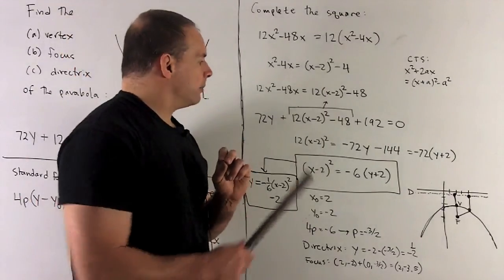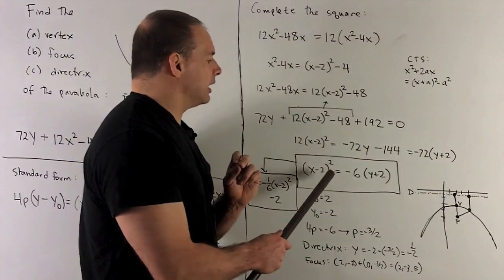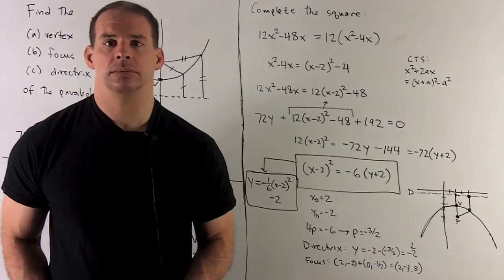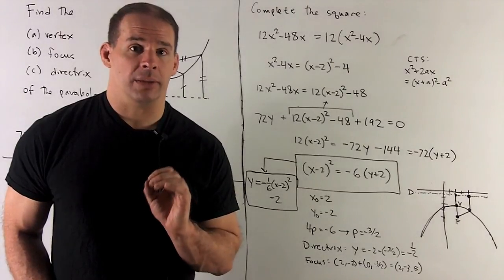Once I've done that, just algebra, I'm going to wind up with (X - 2)² = -6Y + 2. Now that I have the standard form, I can go and find the items on our list.